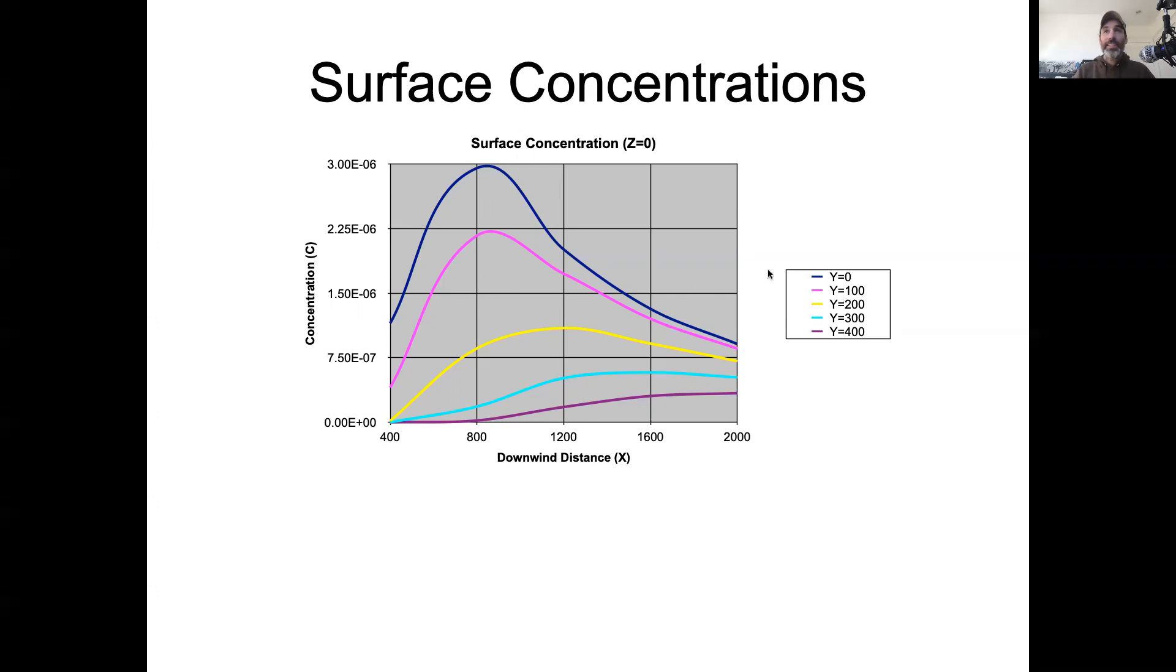Now, if we look laterally away from that main line, one of the things we'll notice is the peak, not surprisingly, the amount goes down. So as we move out laterally from directly downwind to 100 meters to the side, 200 meters, 300 meters, 400 meters, that concentration goes down because now you have to deal not with just the vertical spreading out, but also the horizontal spreading out.